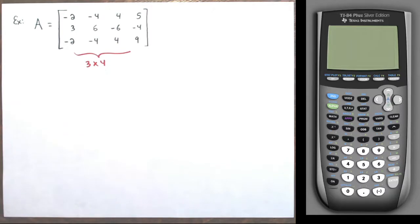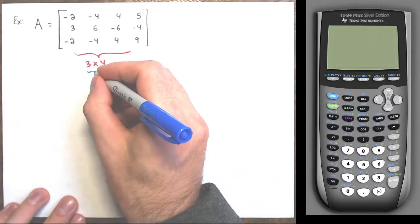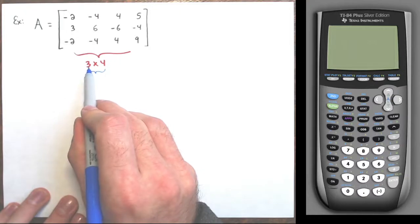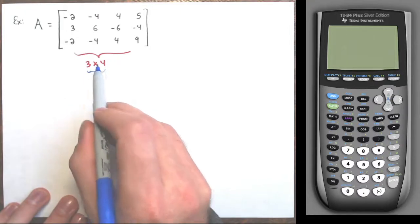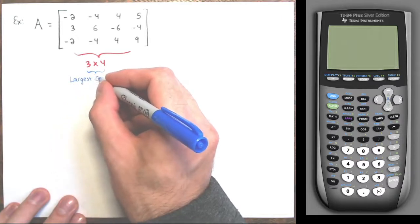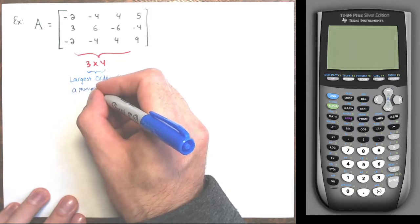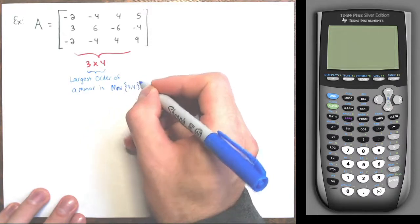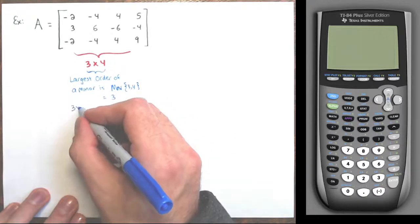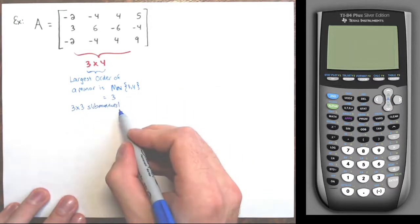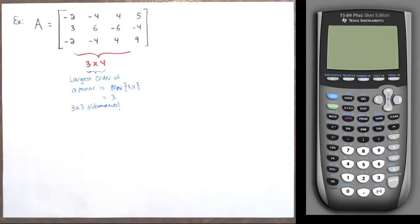What's the largest order of a minor I can get from this? I can't make a four by four matrix, so just look for the smaller of the two numbers — the smaller of three and four is three. The largest square submatrix I can make is a three by three, so the largest order of a minor is three, which is the minimum of three and four. We start by making three by three submatrices. If all three by threes have zero determinants, we go to two by two; if all two by twos are zero, we go to one by one entries.